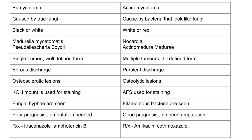The slide shows the differences between eumycetoma and actinomycetoma. Eumycetoma is caused by true fungi, while actinomycetoma is caused by bacteria that structurally resemble fungi. Eumycetoma forms black or white colonies under the microscope, whereas actinomycetoma forms red colonies. Eumycetoma is caused by Madurella mycetomatis or Pseudallescheria boydii, while actinomycetoma is caused by Nocardia or Actinomadura madurae.